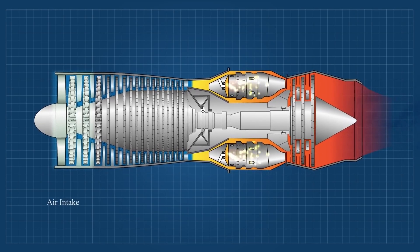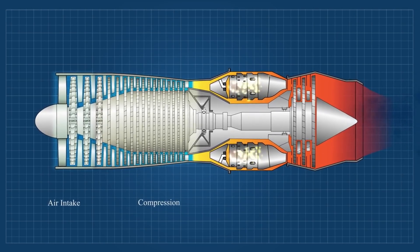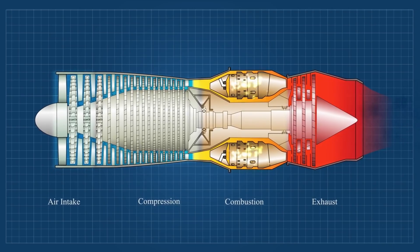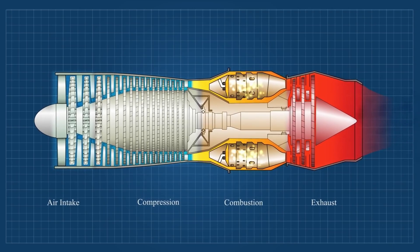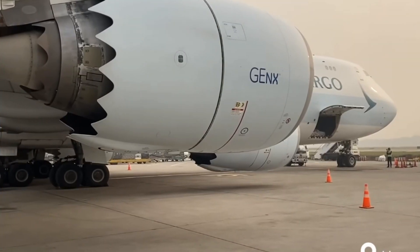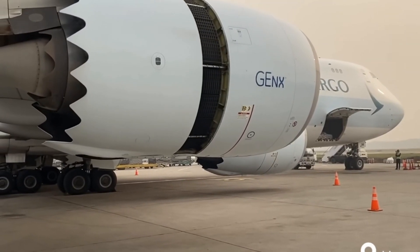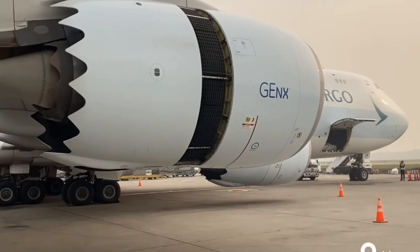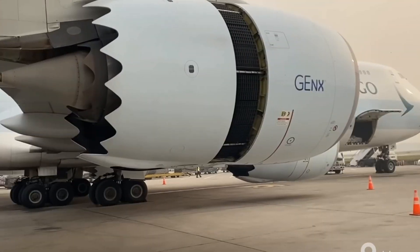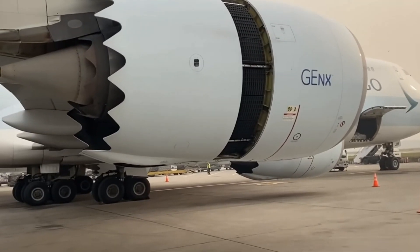When turbojets were introduced, the top speed of fighter aircraft equipped with them was at least 100 miles per hour faster than competing piston-driven aircraft.